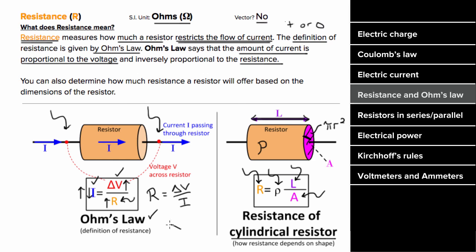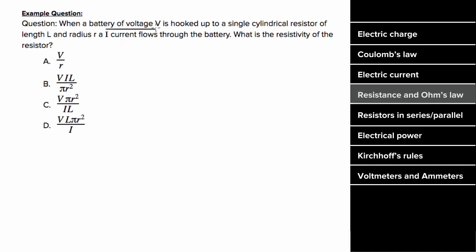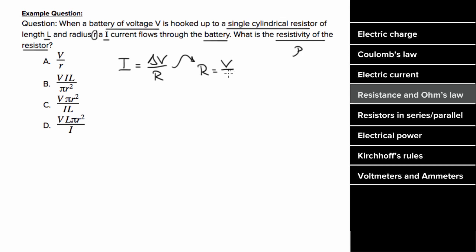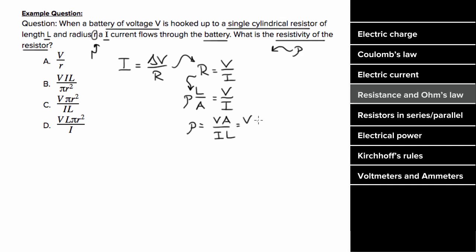For the Ohm's Law example: a battery of voltage V is hooked up to a single cylindrical resistor of length L and radius r, and a current I flows through the battery. What is the resistivity rho? Using Ohm's Law, the resistance equals V over I. Setting that equal to the cylindrical resistor formula ρL/A gives ρL/A = V/I. Solving for ρ: we get V times A divided by I times L. Since we're given radius r, the area is πr-squared, giving ρ = Vπr² / IL, which is answer C.